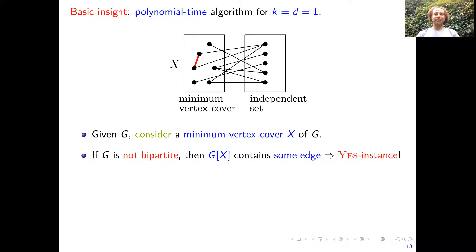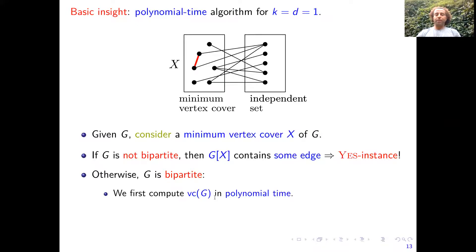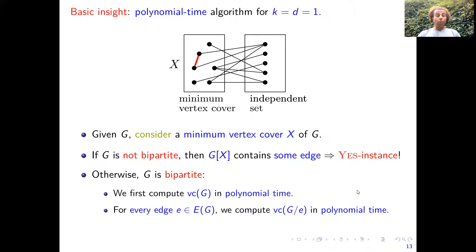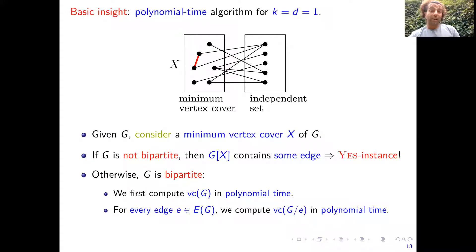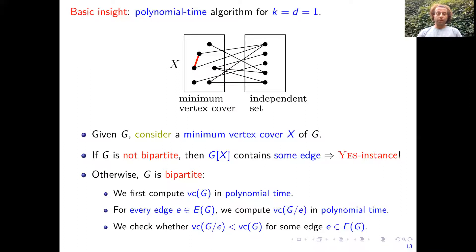Without knowing who X is or what this edge is, we can directly answer that if G is not bipartite, we are dealing with a yes instance. This is the main observation constituting a fundamental difference between vertex cover and the other parameters. If G is bipartite, we exploit that the vertex cover in bipartite graphs can be solved in polynomial time by König's theorem. We compute the vertex cover in polynomial time, and then for every edge it is easy to check using a simple branching algorithm whether contracting it drops the vertex cover. So the algorithm first checks if the graph is bipartite — if not, answer yes; if yes, solve easily in polynomial time.